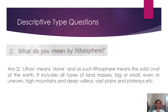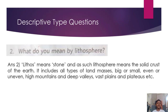What do you mean by Lithosphere? Lithos means stone, and so lithosphere means the solid crust of the Earth. It includes all types of land masses — big or small, even or uneven, high mountains and deep valleys, washed plains and plateaus etc.